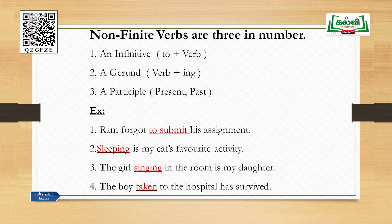Second sentence: 'Sleeping is my cat's favorite activity.' 'Sleeping' is a gerund — a verbal noun, a verb that acts as a noun — and it is a non-finite verb. 'Is' is a finite verb showing present tense. Third sentence: 'The girl singing in the room is my daughter.' 'Singing' is a present participle — a non-finite verb — and 'is' is the finite verb. Fourth sentence: 'The boy taken to the hospital has survived.' 'Taken' is a past participle — non-finite — and 'has survived' in present perfect tense is the finite verb.